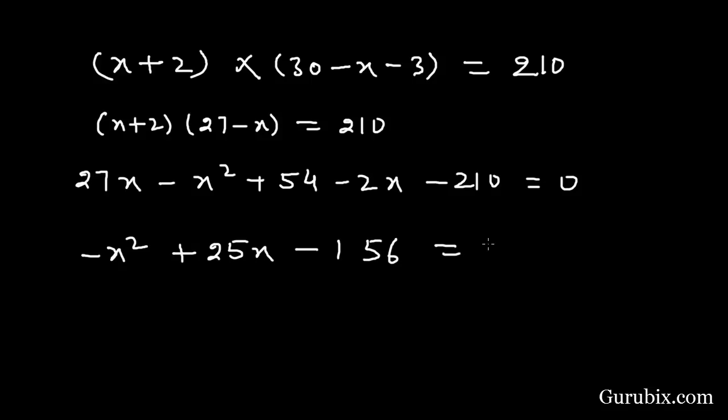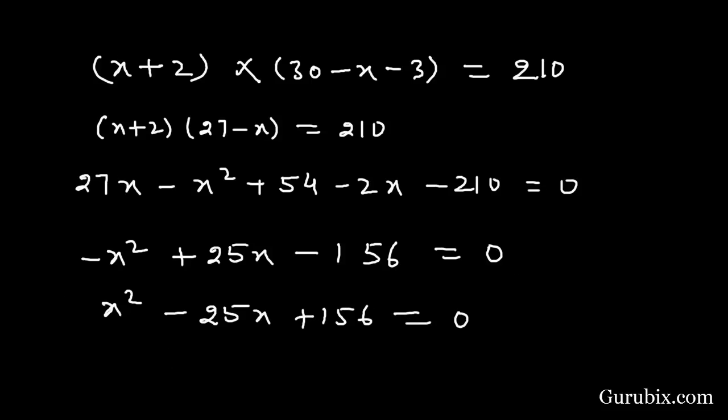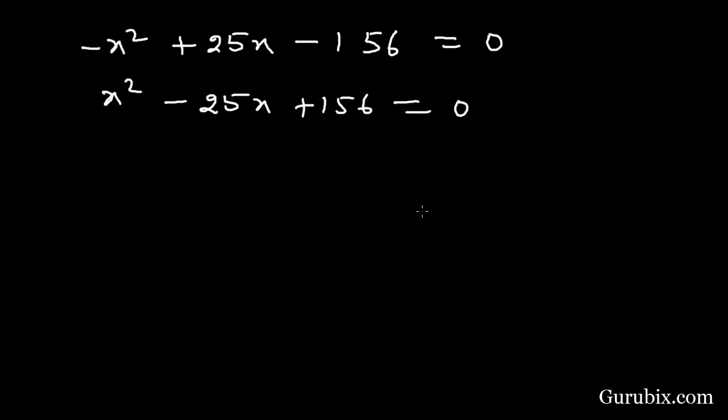And now we shall divide both sides by minus 1. Then we have x square minus 25x plus 156 equals to 0. And now we shall factorize this equation by using the middle term splitting method. Then we have x square minus 13x minus 12x plus 156 equals to 0.